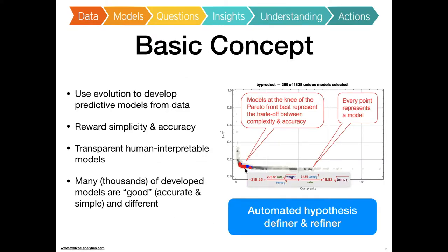So I sort of have to explain what we do. The basic notion is that we're going to use evolution to develop models from data, and what makes a good model is simplicity and accuracy. We want a good simple model. We're going to reward those, and we're going to develop algebraic equations. So, you know, human interpretable expressions.